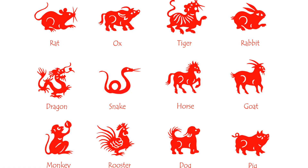You've probably heard of the 12 Chinese zodiac animals: rat, ox, tiger, rabbit, dragon, snake, horse, goat, monkey, rooster, dog and pig, which repeat every 12 years.